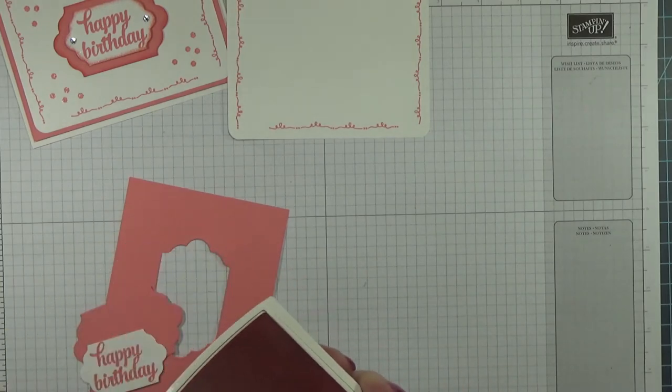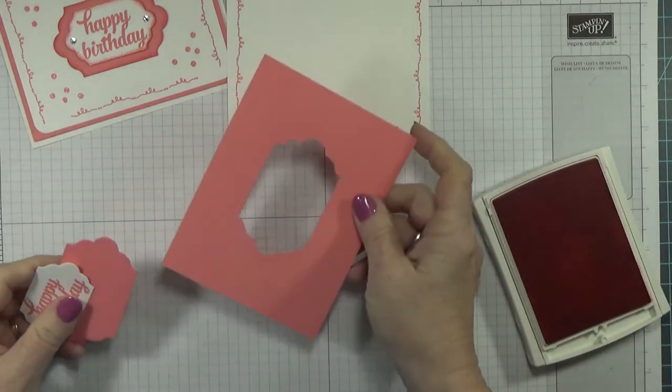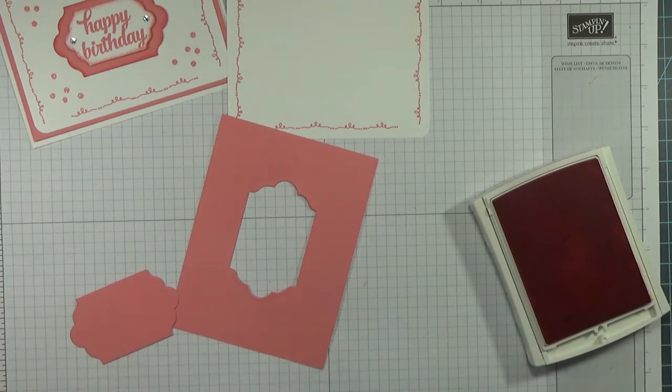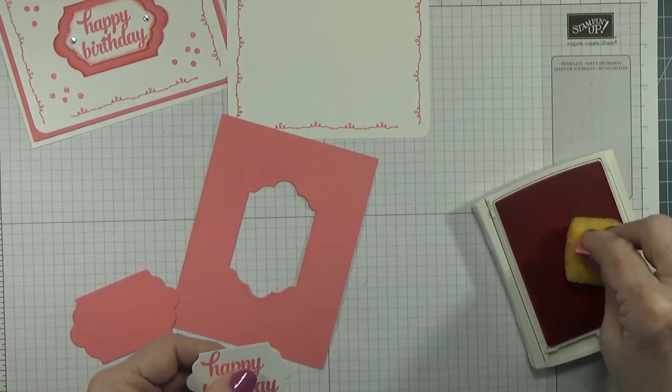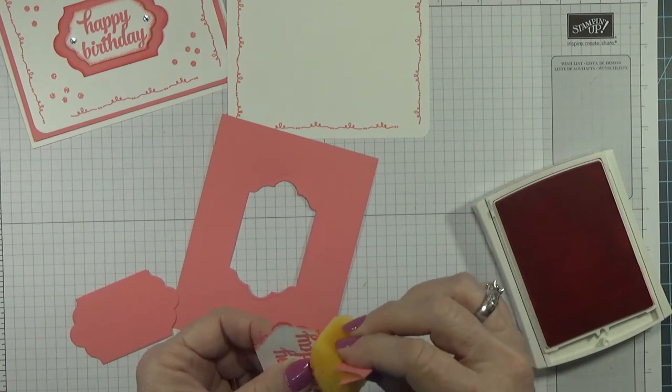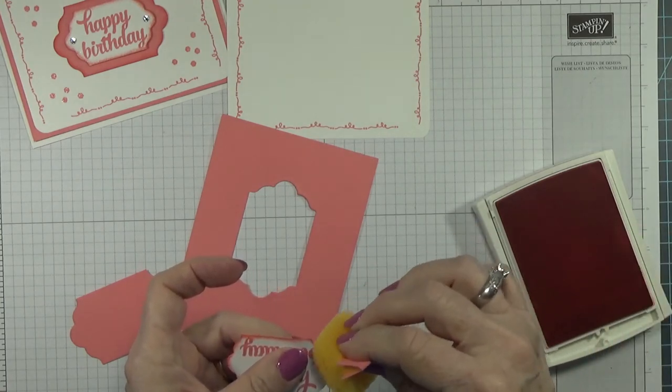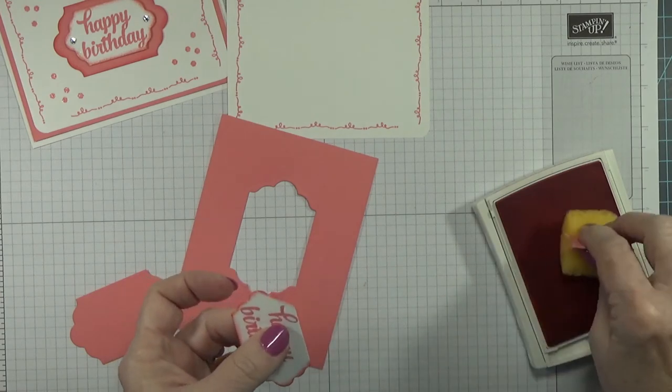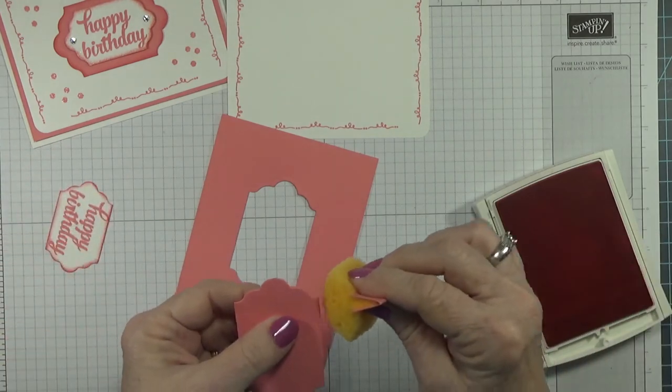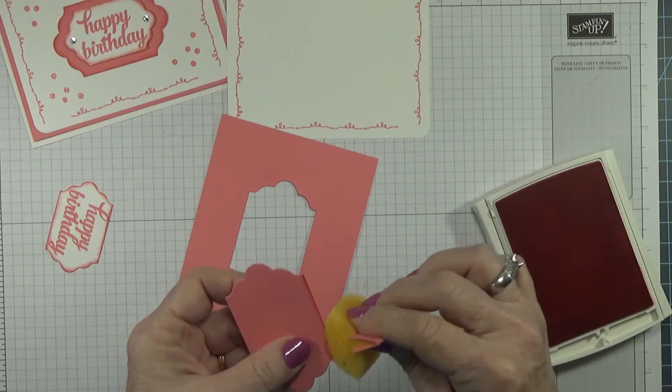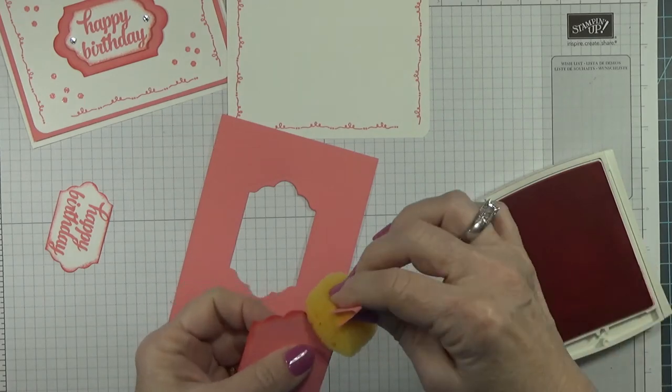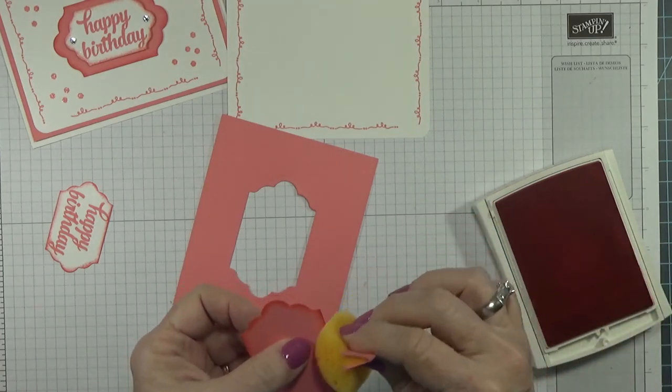This time I was able to cut it out and it was the right one. If you'll notice my background for this, I sponged both of them to give them a little depth. Let's go ahead and do that. This one I do want a little heavy so it does show up because it is the same color as the cardstock, which is Flirty Flamingo.